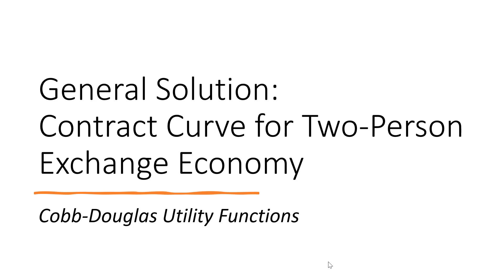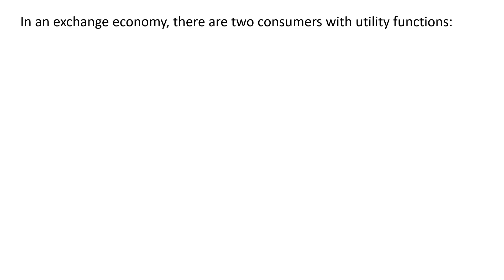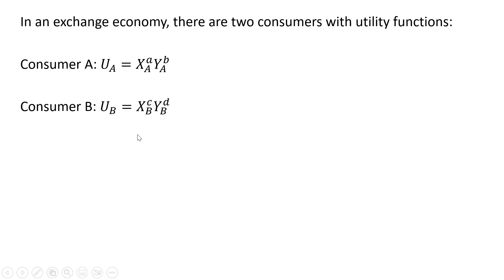In this video we're going to look at the general solution for a contract curve for a two-person exchange economy. These two persons will have Cobb-Douglas utility functions. In the exchange economy there are two consumers with utility functions, consumer A and consumer B. This is a general solution when we have two consumers each with Cobb-Douglas utility functions.